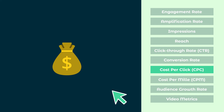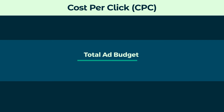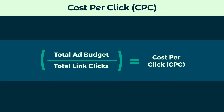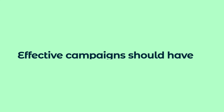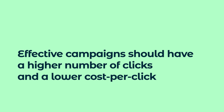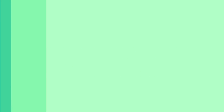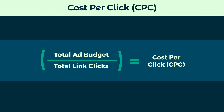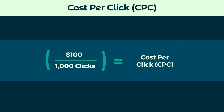Up next, cost per click is a metric used in paid social ads. It's calculated as the ad budget divided by the number of clicks your post receives. Effective campaigns should have a higher number of clicks and a lower cost per click. For example, if you spent $100 and received 1,000 clicks, your CPC would be 10 cents per click.